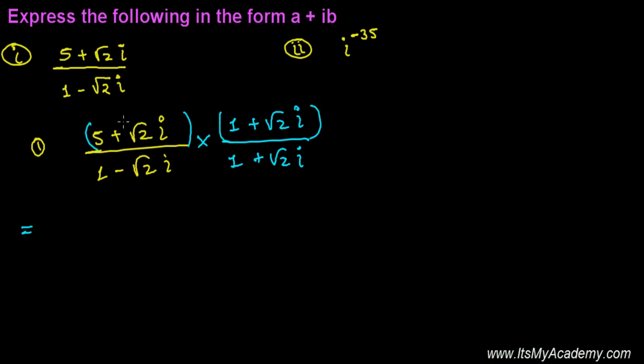Let me do it manually so you understand better. It's (5 + √2i) times (1 + √2i), and then (1 + √2i) again. Next time I'll show you the shortcut.